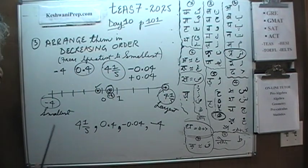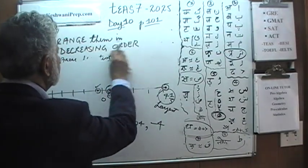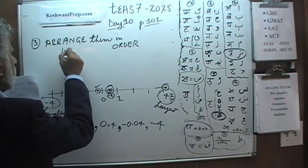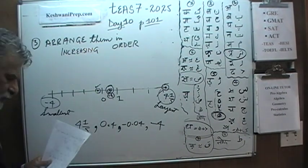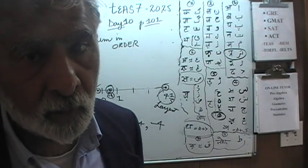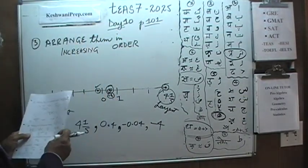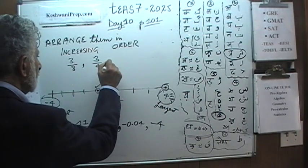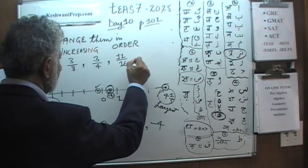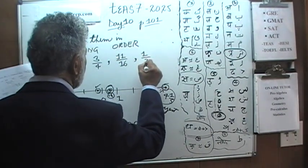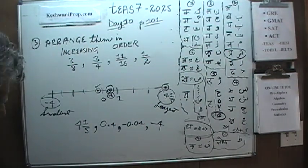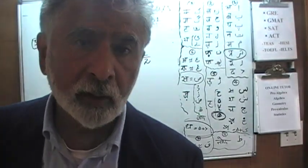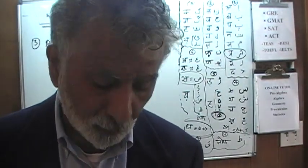Let's take a look at the next one. In the next one, they're asking us to arrange the numbers in increasing order — increasing order means we're going to start with the smallest one and work our way up to the largest one. Here are the quantities: we have three-eighths, three-quarters, eleven-sixteenths, and one and one-half. I'm going to pause here for a second to give you a little pep talk. This is a course, and just like any course, if you go to lecture number 10, the teacher assumes you attended the last nine lectures.